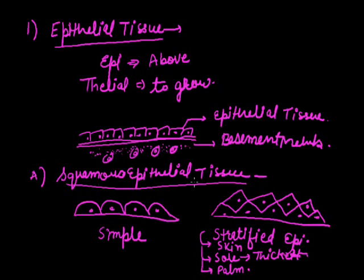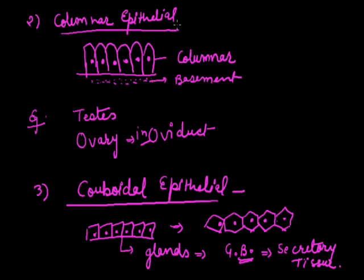Epithelial tissue can be classified as squamous epithelial tissue, where flattened cells are found. If arranged in a single layer, it is called simple squamous epithelium; if arranged in a multi-layered structure, it is called stratified epithelium. The second type is columnar epithelium, where elongated, pillar-like cells are arranged at the basement membrane, forming a more protective covering. The third type is cuboidal epithelial tissue, where cubic cells are arranged at the basement membrane; they may be single-layered or multilayered and are rich in Golgi bodies, making them suited for secretory functions.